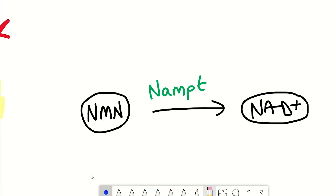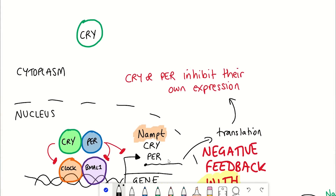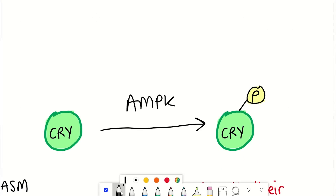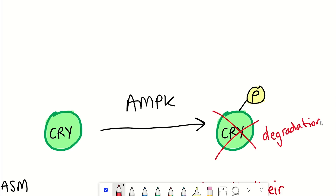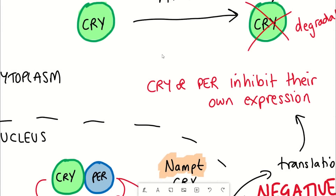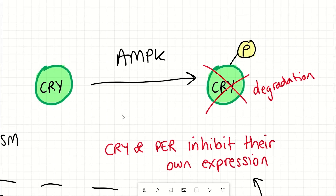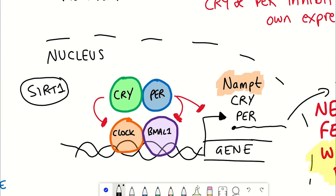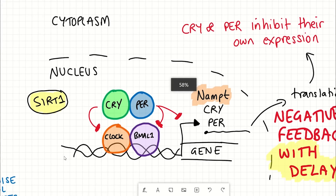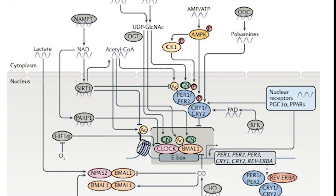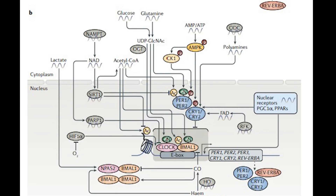These longevity signaling factors also feed back onto the core clock components. AMP kinase has been shown to phosphorylate cryptochrome, which is thought to be involved in the degradation of cryptochrome, thereby alleviating the repression on CLOCK and BMAL1. Moreover, the NAD+-dependent enzyme Sirtuin-1 directly binds to CLOCK and BMAL1, rhythmically deacetylates them, and also promotes degradation of period — helping to maintain a robust circadian rhythm. These are just a couple of examples from the growing knowledge of how these two pathways crosstalk.